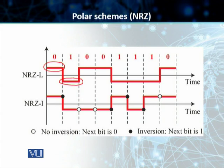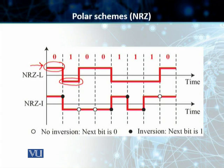We have two versions of polar NRZ: NRZ-L and NRZ-I. L stands for level and I stands for invert. In NRZ-L, the level of the voltage determines the value of the bit. In NRZ-I, the change or lack of change in the level of voltage determines the value of the bit. In NRZ-L, we have assigned levels for 0s and 1s: positive voltage for 0, negative voltage for 1. As soon as we move from 0 to 1, the voltage changes from positive to negative and stays constant because it is NRZ.